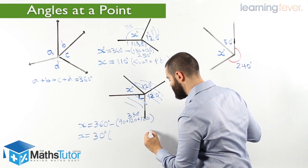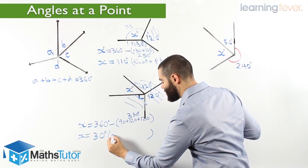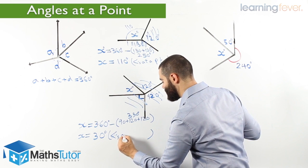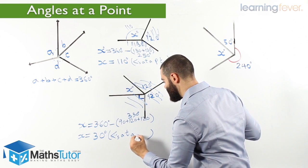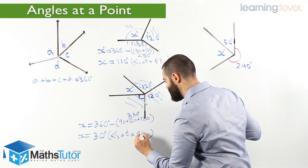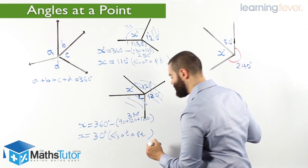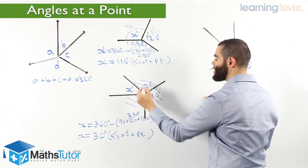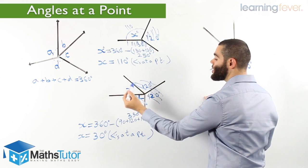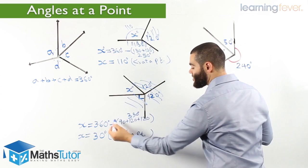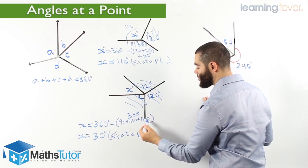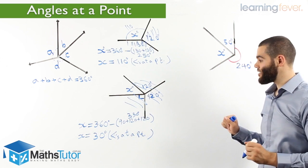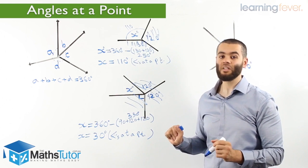And of course, our reason: angles at a point. These are the four angles — they all meet at a point. Take away 120, take away another 120, take away 90 from 360, and we're left with 30 degrees. Very straightforward, as you can see.